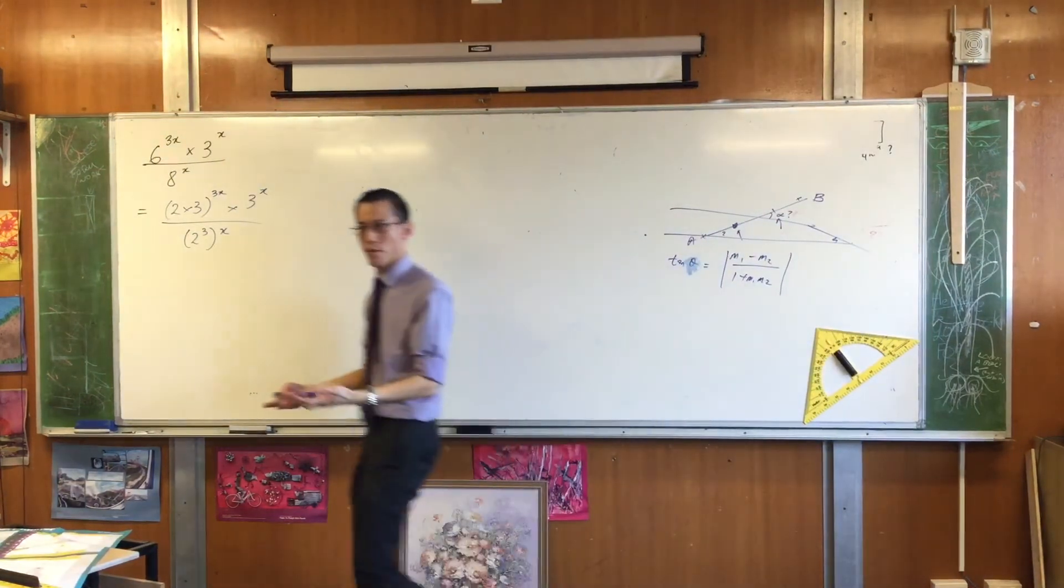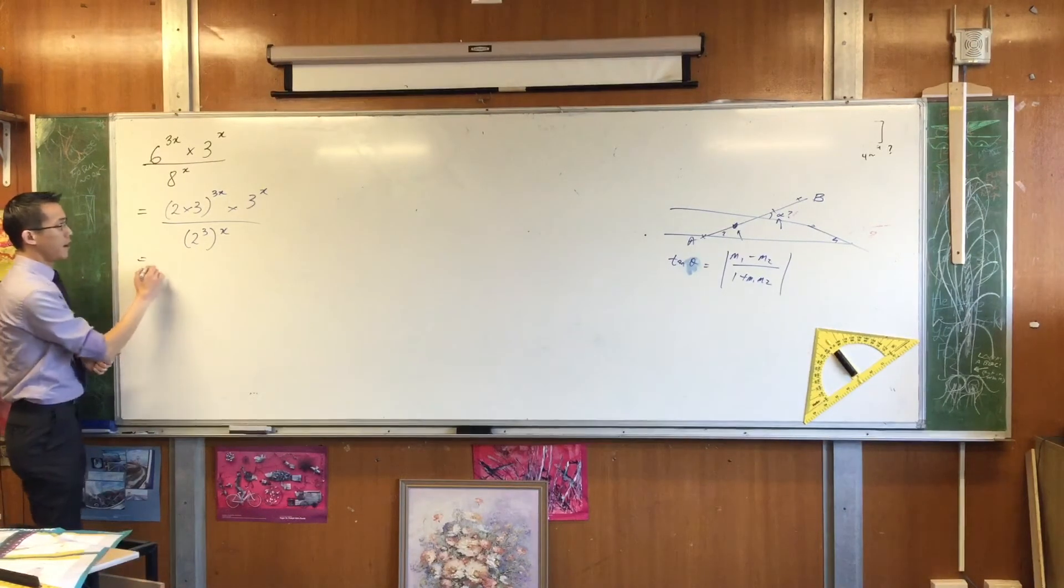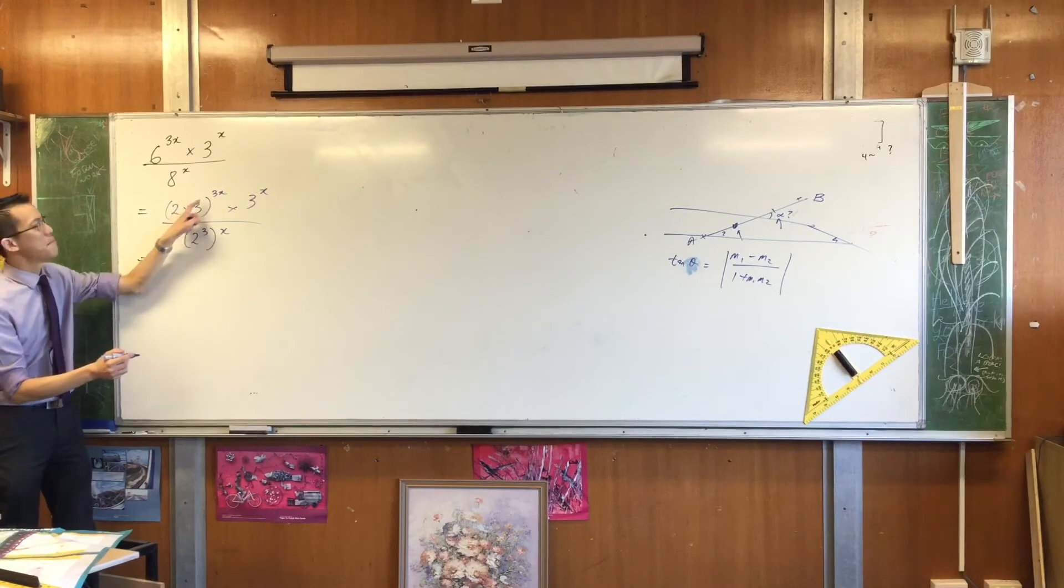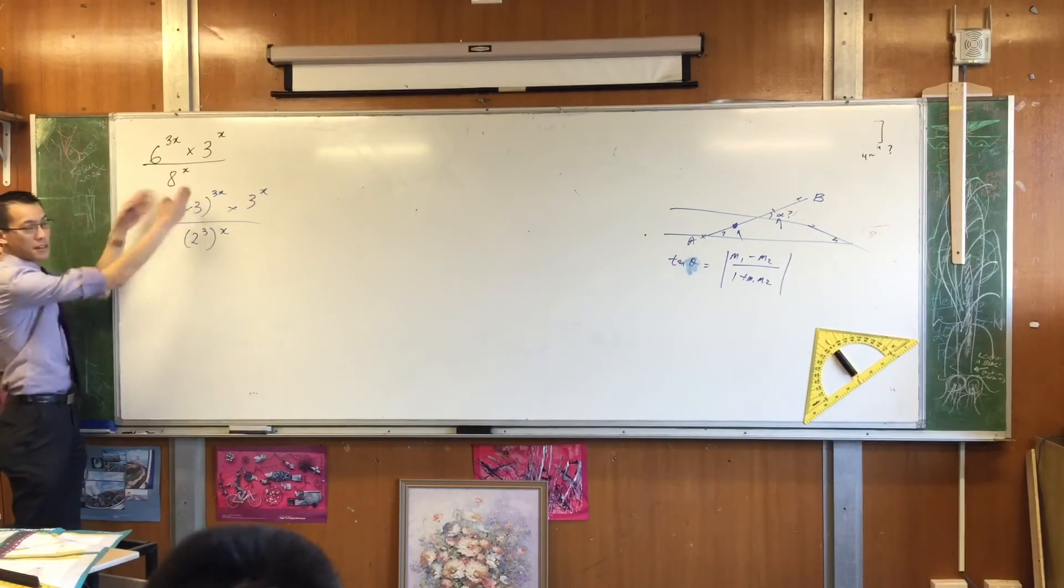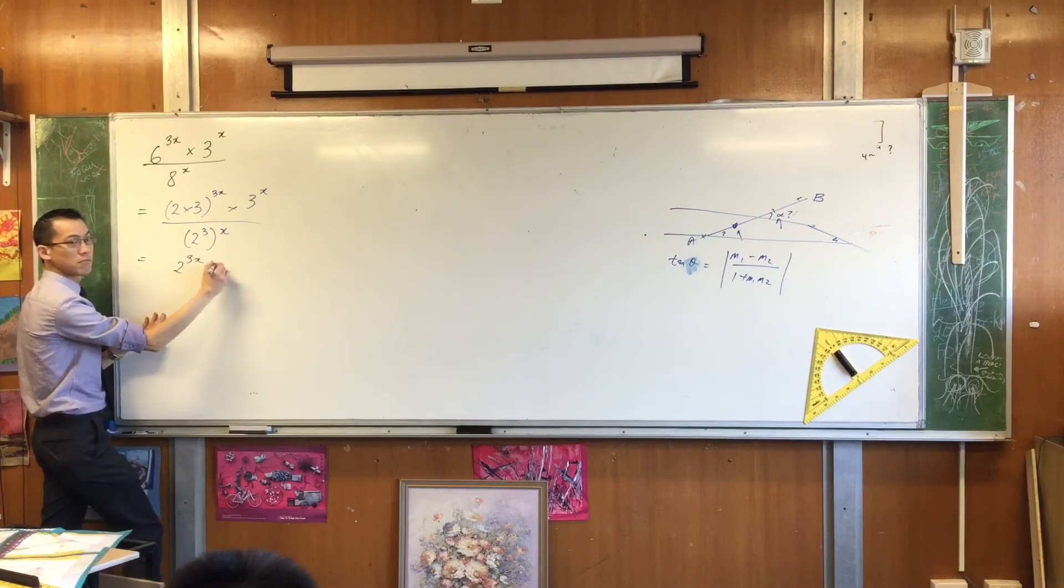And now, this question is just like what I was saying before. Oh look, I have similar bases so I can compare things. Using your index laws you can see, if you've got two numbers in here, they're both being raised to the power of 3x because of the brackets. So when I expand, what will I write? 2 to the power of 3.